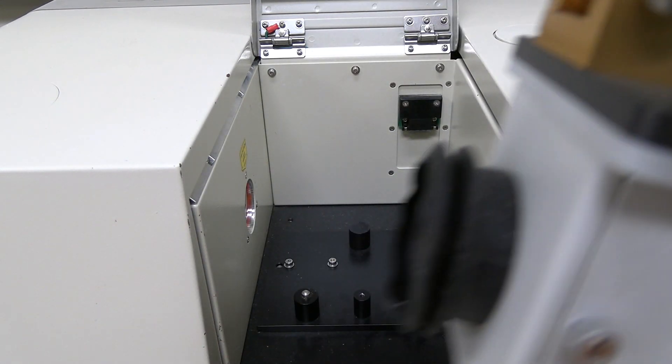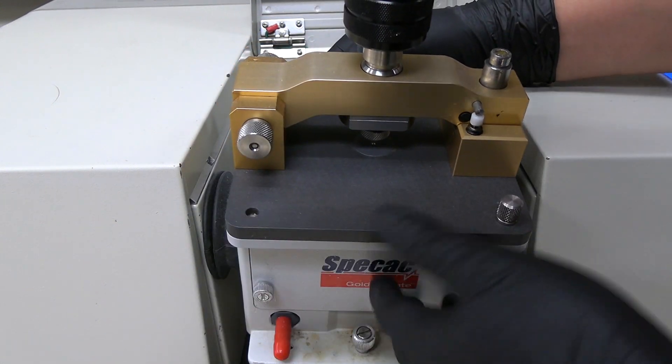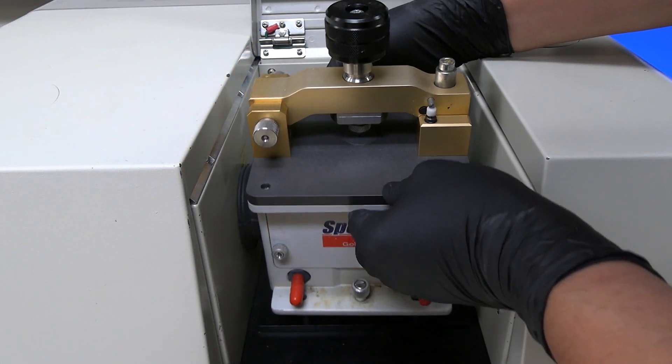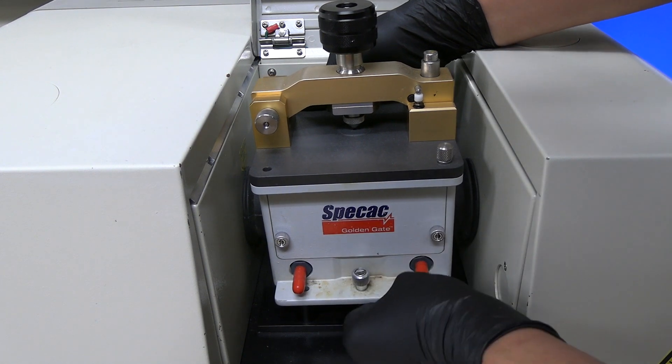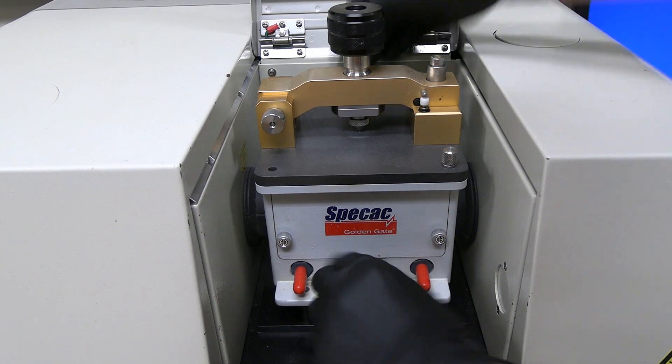Insert the ATR into the sample chamber. You will need to compress the covers on each side of the ATR. There are pegs that align with two holes on the front of the ATR. Press down and tighten the thumb screw on the front of the ATR.